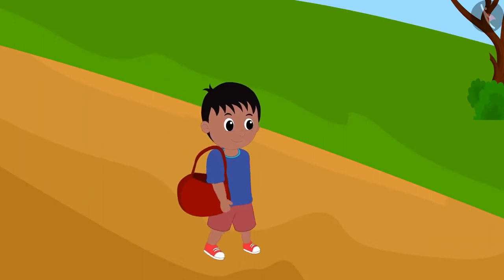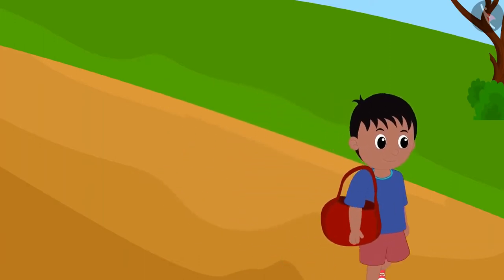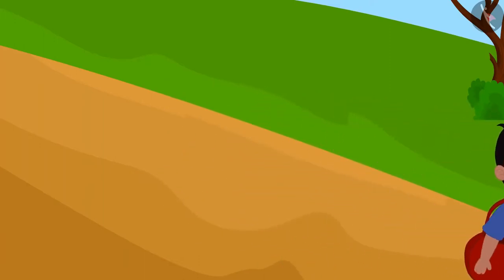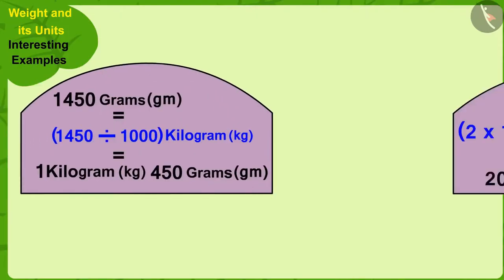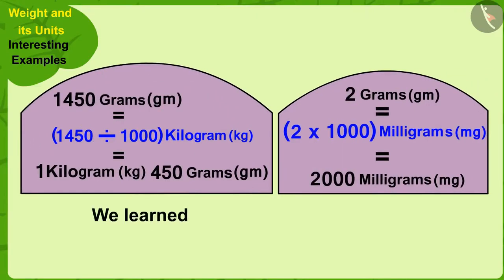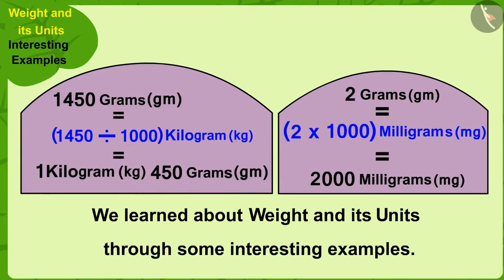Raju bought paneer and saffron from Appu and returned home. Children, in this video, we learned about weight and its units through some interesting examples. In the next video, we will look at some of the misconceptions related to this.